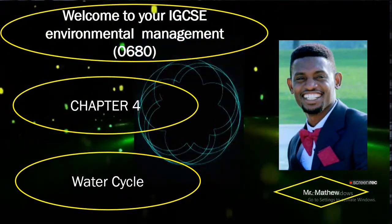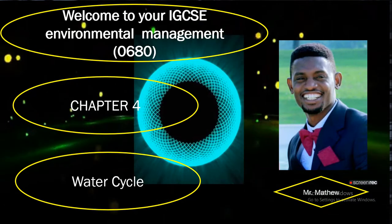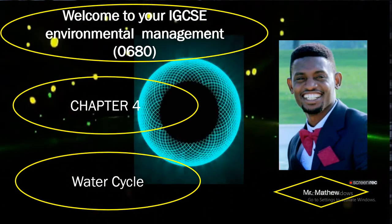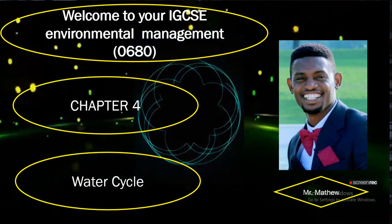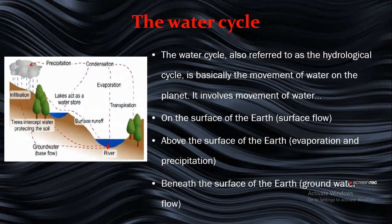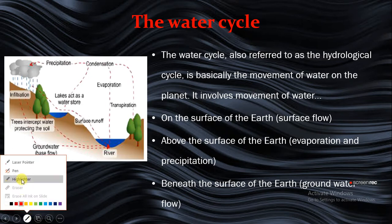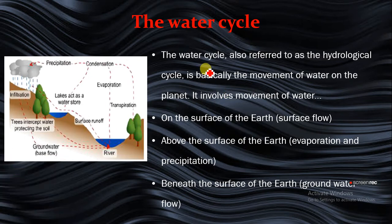This is still IGTC Environmental Management Chapter 4. This part we're going to be looking at the water cycle. The water cycle, also referred to as the hydrological cycle, is basically the movement of water on the planet.